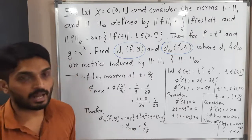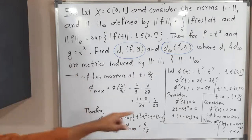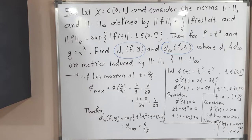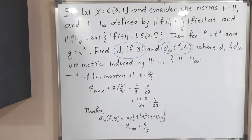So the required answers are: D₁(f,g) = 1/12 and D∞(f,g) = 4/27. Thank you. Bye bye.